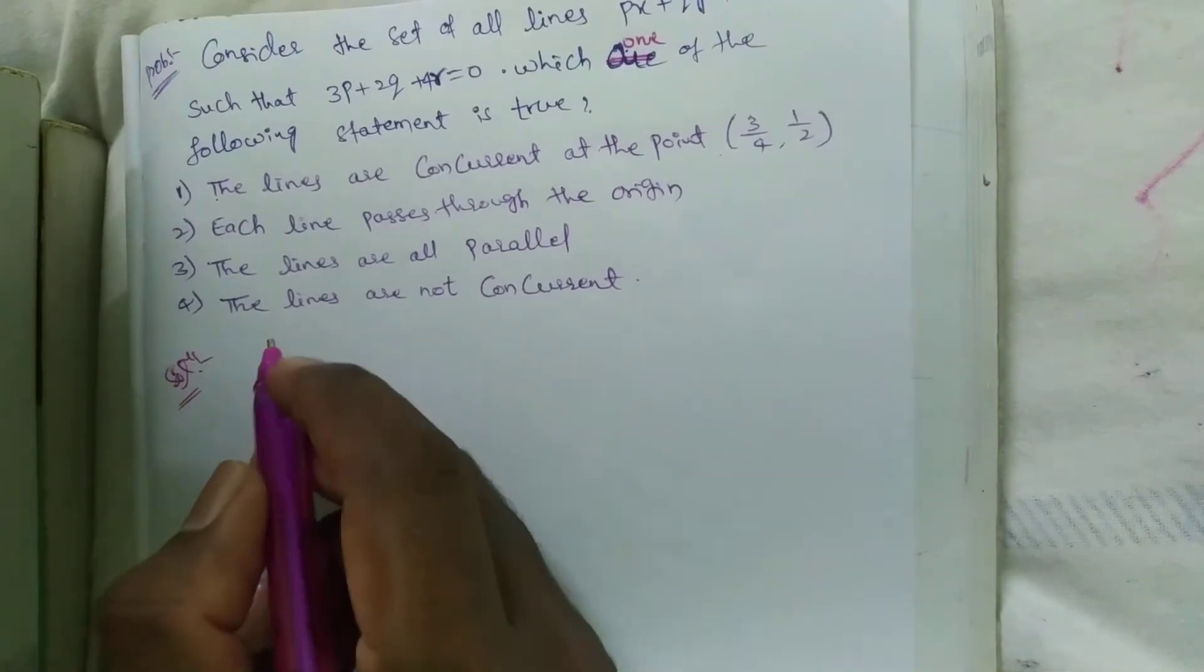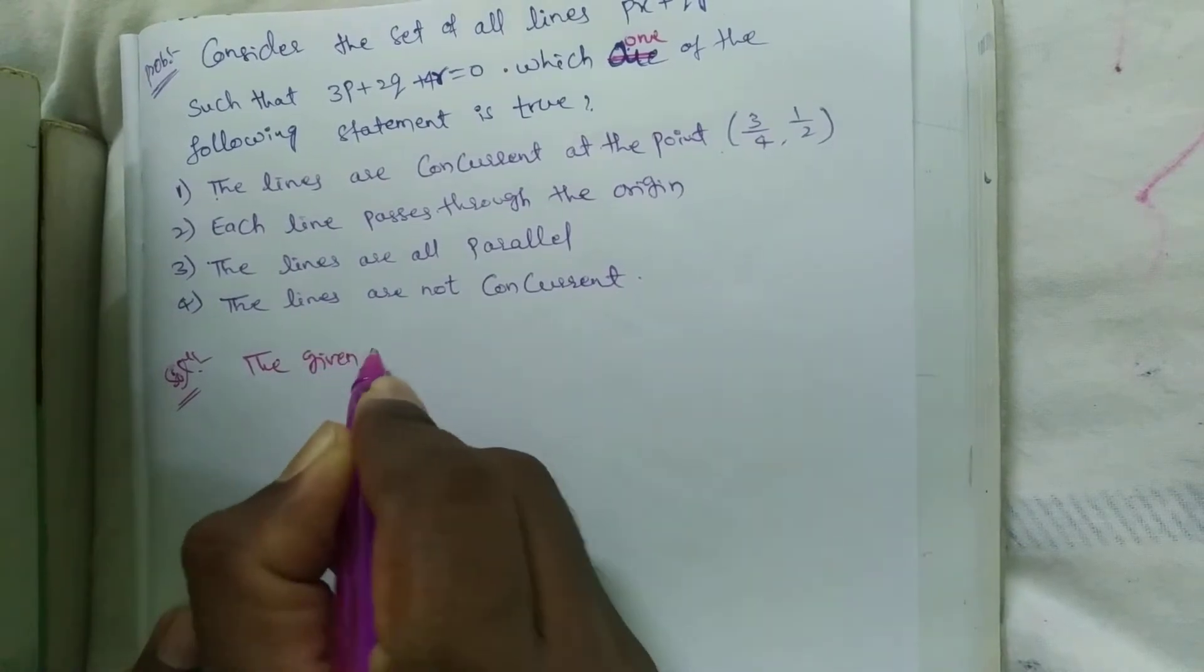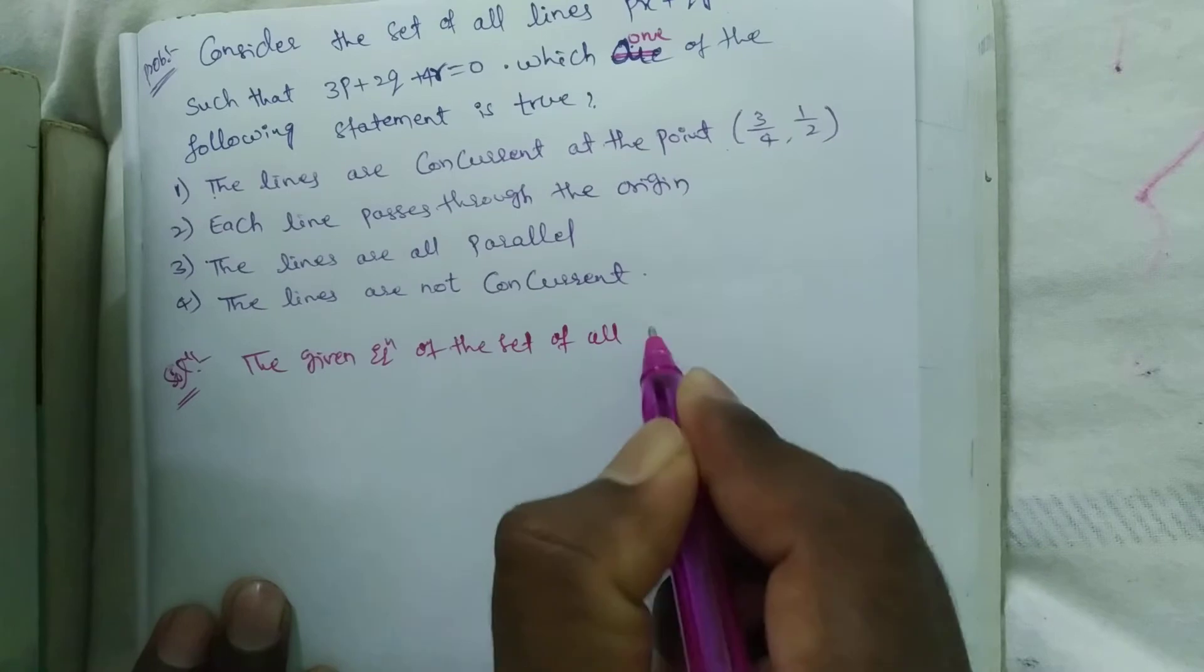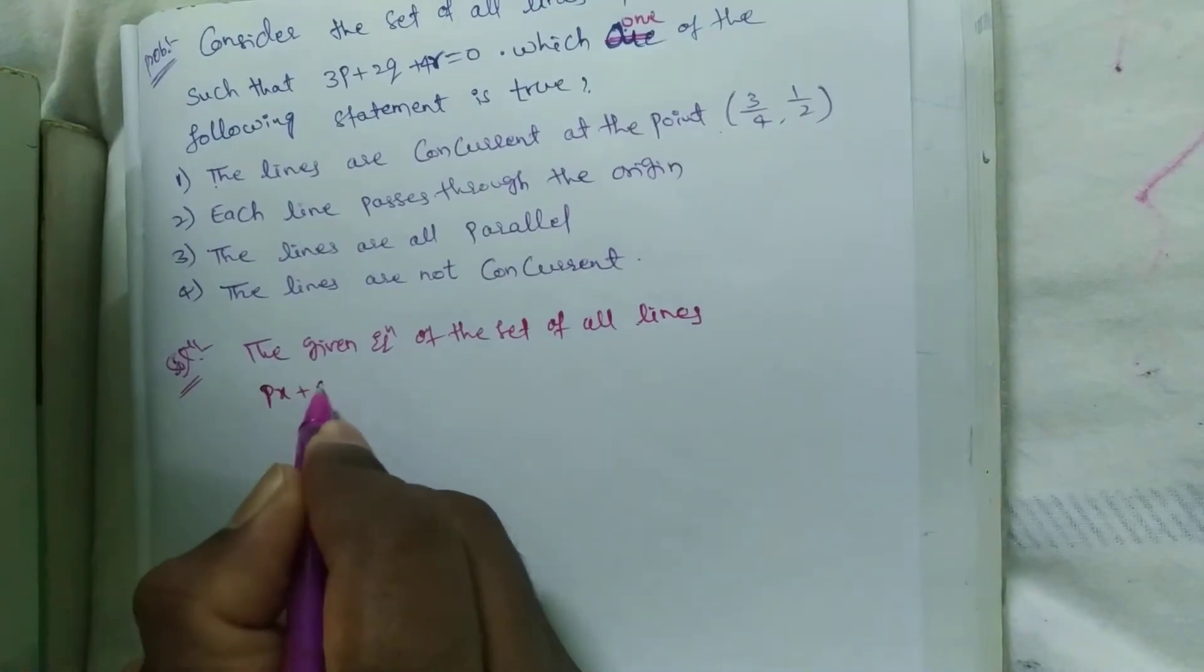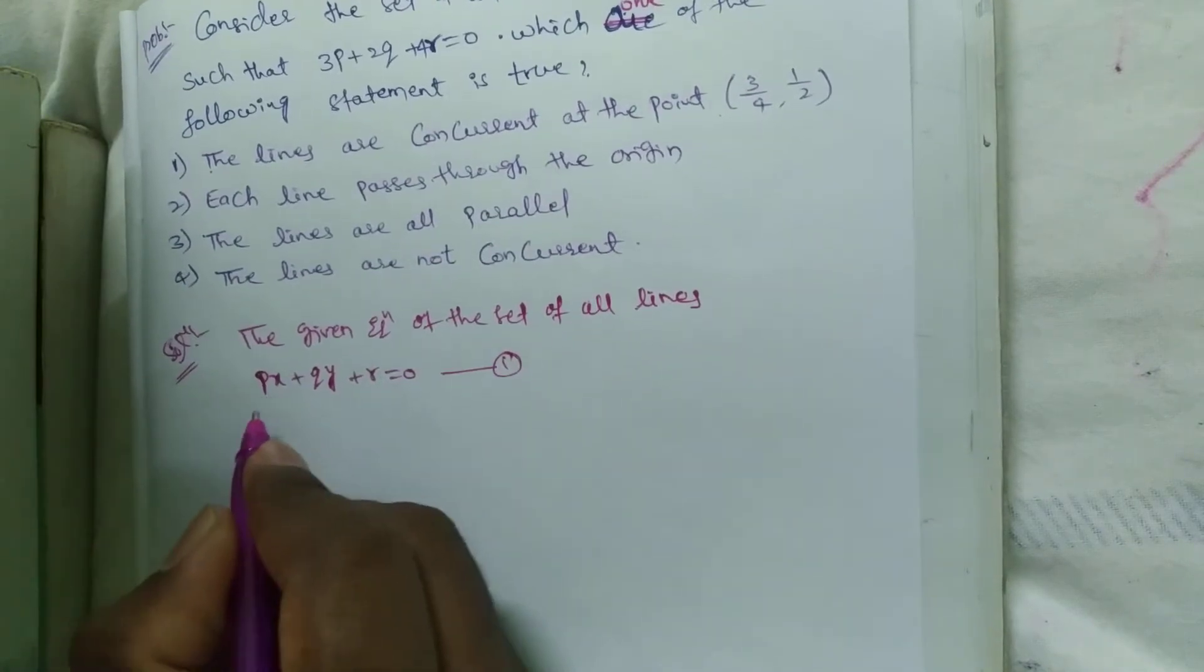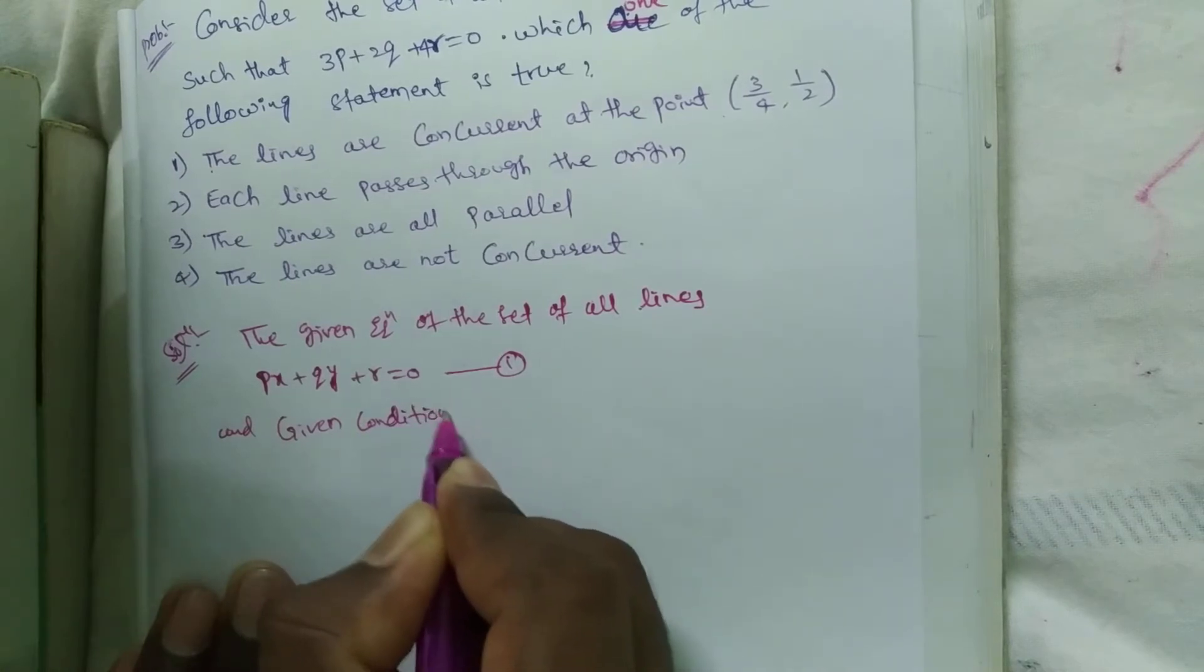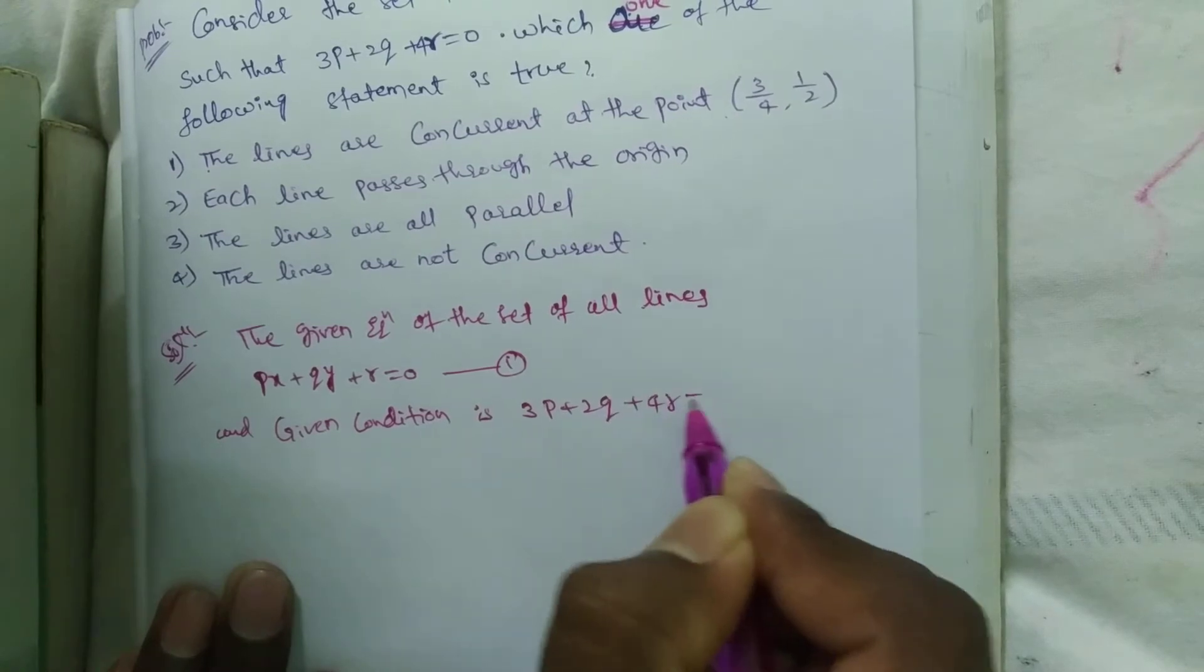The given equation of the set of all lines: px plus qy plus r equal to 0, equation number 1. And given condition is 3p plus 2q plus 4r equal to 0.